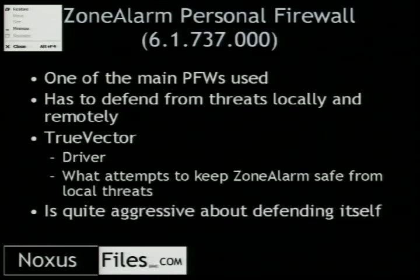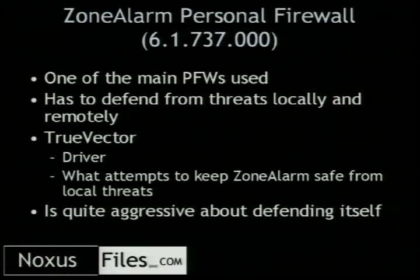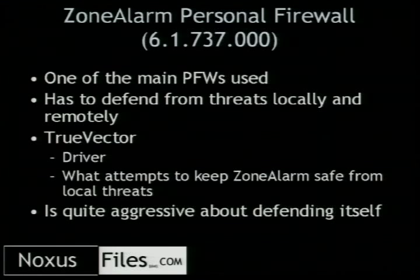The next firewall we're going to go after is the ZoneAlarm Personal Firewall — this is a slightly older version and I'll also discuss the new one. This is one of the main personal firewalls used. Personal firewalls have a hard job because they have to defend from threats locally and remotely. One of the most important components in this firewall is called True Vector. It's basically a driver — the network part of it. ZoneAlarm is really pretty much a GUI on top of it. This is basically a beneficial rootkit to your system that keeps it safe from local threats.